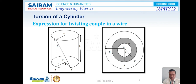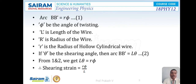Consider one concentric circular layer of radius r and thickness dr. Consider a point A at the top which is fixed, and a point B at the bottom which shifts to B' due to the twisting motion. The angle BAB' is equal to θ and the angle BOB' is equal to φ. Therefore, the arc BB' can be written as r·φ or as L·θ. Here, arc BB' = rφ (equation 1), where φ is the angle of twisting, L is the length of the wire, R is the radius of the wire, and r is the radius of the hollow cylindrical layer.